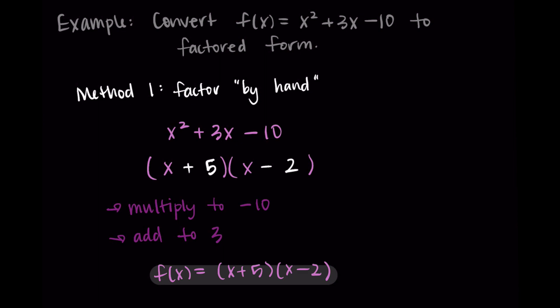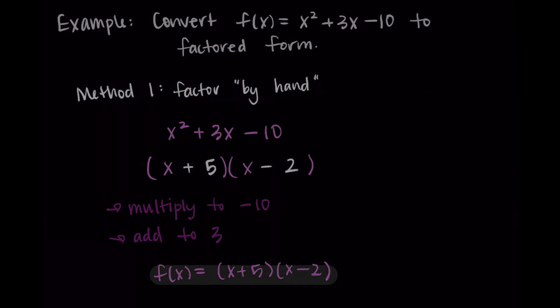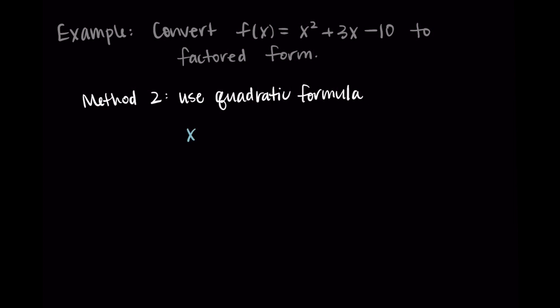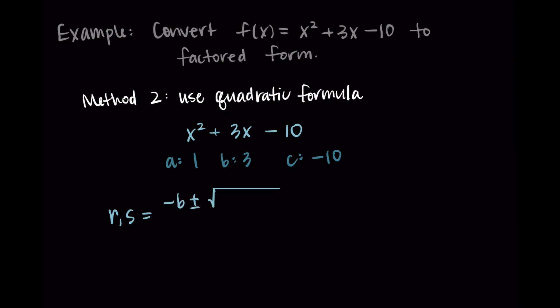If you're ever working on one of these and get stuck and really don't know how to factor it, you can always use the quadratic formula. Starting with x squared plus three x minus 10, I identify a, b, and c: a is one because we have one x squared, b is three, and c is negative 10. Our horizontal intercepts r and s are equal to negative b plus or minus the square root of b squared minus four ac all over two a, and now I substitute in each value and simplify.